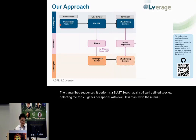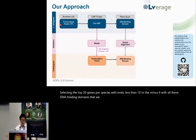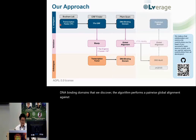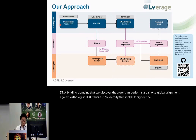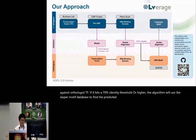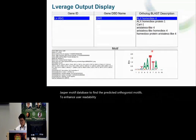With all the DNA binding domains discovered, the algorithm performs a pairwise global alignment against orthologous TFs. If it hits a 70% identity threshold or higher, the algorithm will use the JASPAR motif database to find the predicted orthologous motifs. To enhance user readability, we also developed a graphical user interface to report the results.